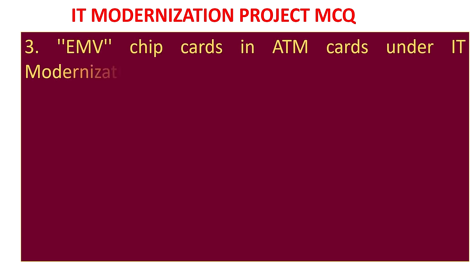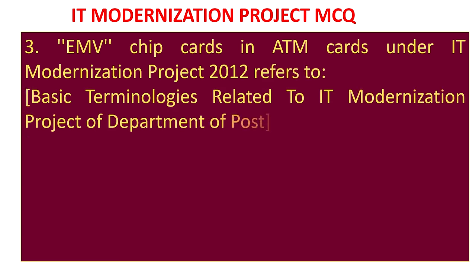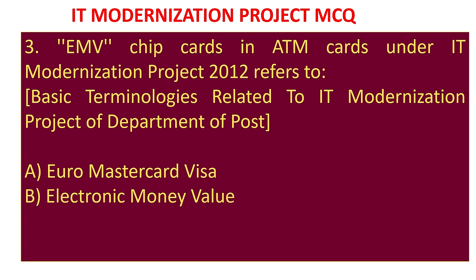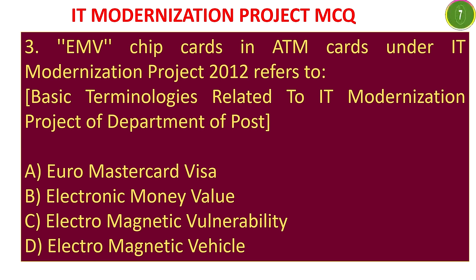MCQ 3: EMV chip cards in ATM cards under IT modernization project 2012 refers to - A) Euro Mastercard Visa, B) Electronic Money Value, C) Electronic Magnetic Vulnerability, D) Electromagnetic Vehicle. The answer is Euro Mastercard Visa. Earlier we used magnetic cards, which have been replaced with EMV chip cards to provide more security to ATM cards. EMV means Euro Mastercard Visa.